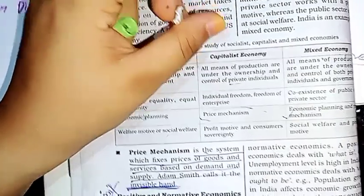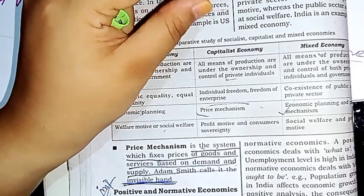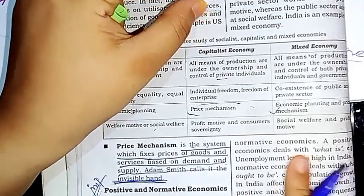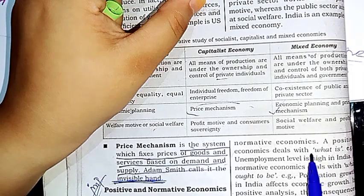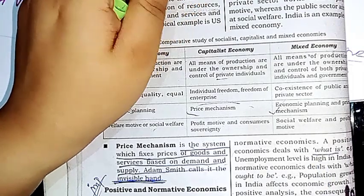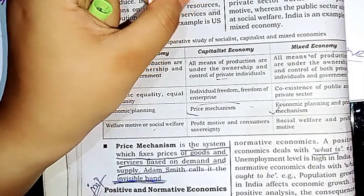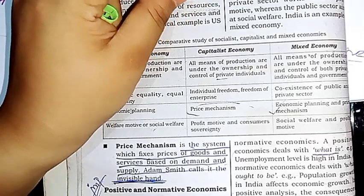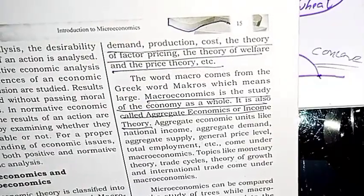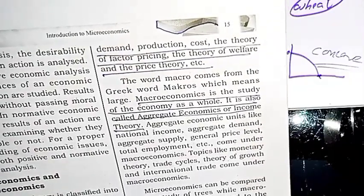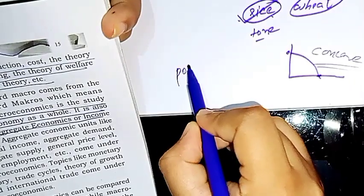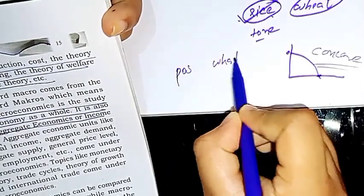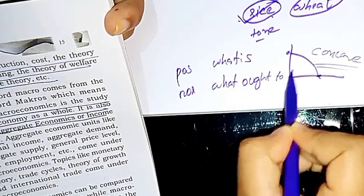The next topic is positive and normative economics. Positive economics deals with what is — it describes economic facts. Normative economics deals with what ought to be — it makes value judgments about what the economy should look like.